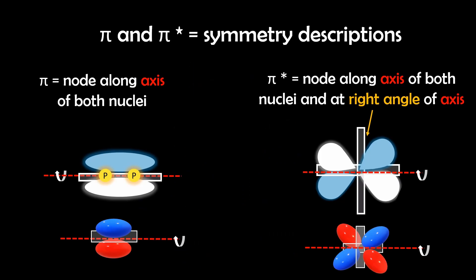Bonding pi orbitals have a node along the internuclear axis, since there's no electron density directly between the nuclei. They also have an antibonding or pi star orbital that have two nodes along the internuclear axis and another between the two lobes.